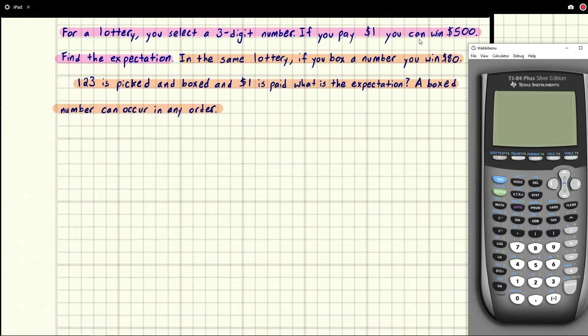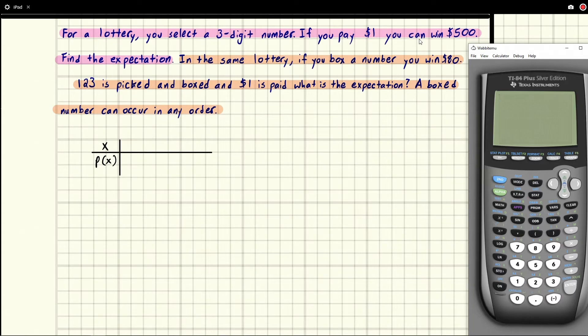So we can represent this with a probability table. And we can say, okay, here's the event x. And here is the probability of x. So there's the case where we pay a dollar and we lose. So we lose a dollar. And we lost. How many ways are there to lose?